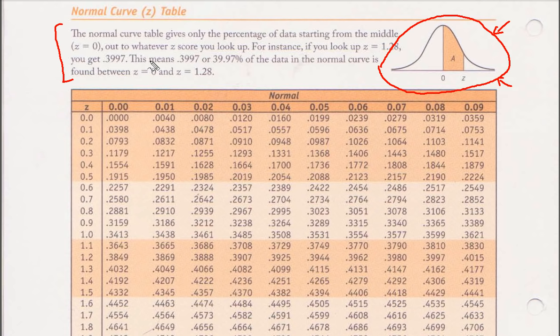So let's see what it says. It says that this normal curve table gives only the percentage of data starting from the middle. This is the Z distribution. So remember mu is equal to zero and sigma is equal to one. This is the standard normal distribution.